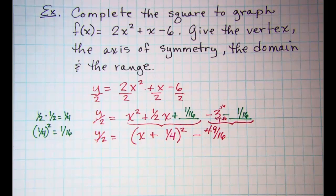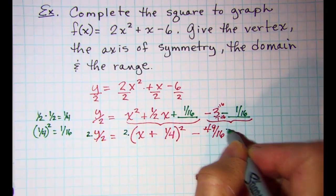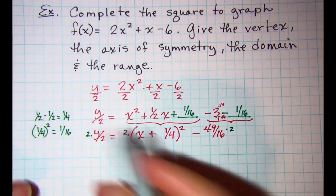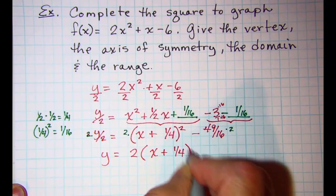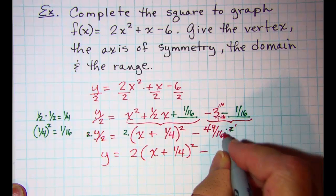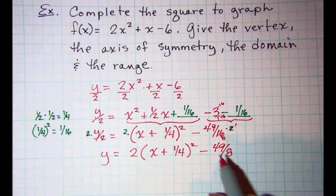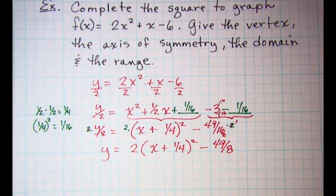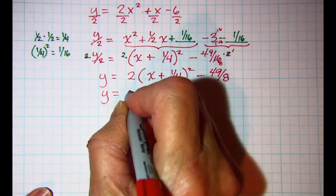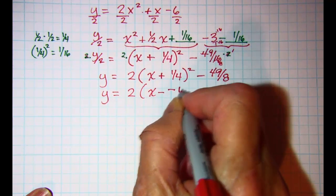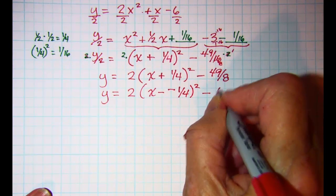My last step is to multiply through by 2 to get this back to y equals 2 times the quantity x plus 1 fourth squared minus 49 eighths. So let's take a look at this vertex form and I'm going to rewrite this as x subtract a negative 1 fourth and then 49 over 8 is the same as 6 and 1 eighth.